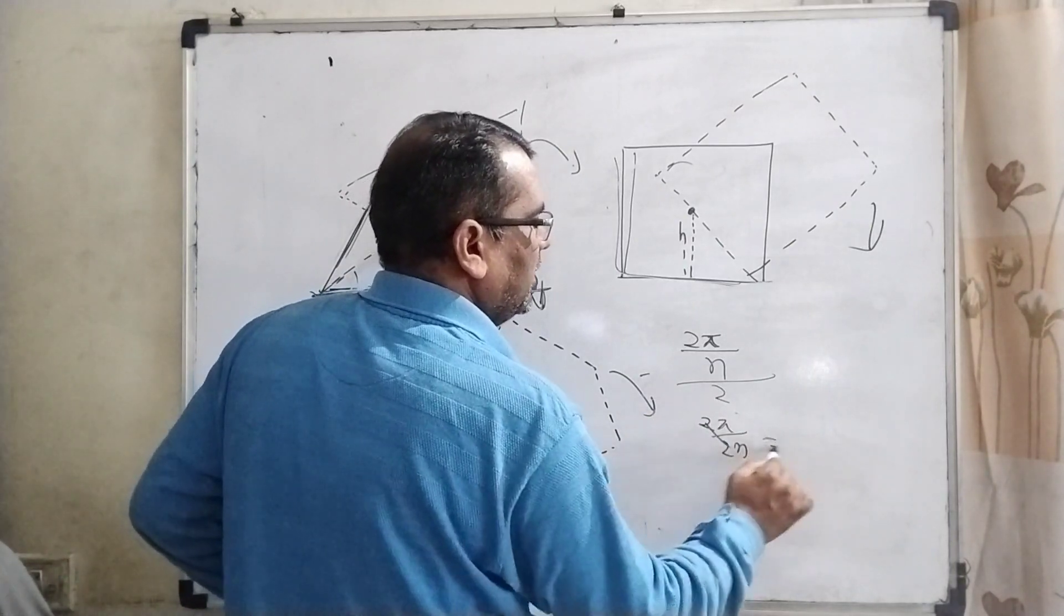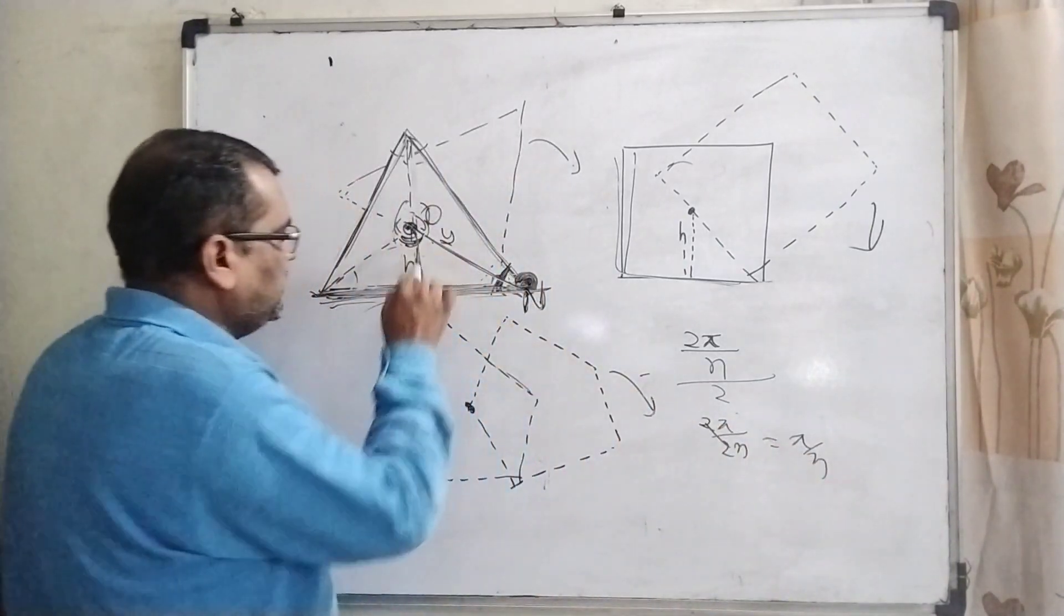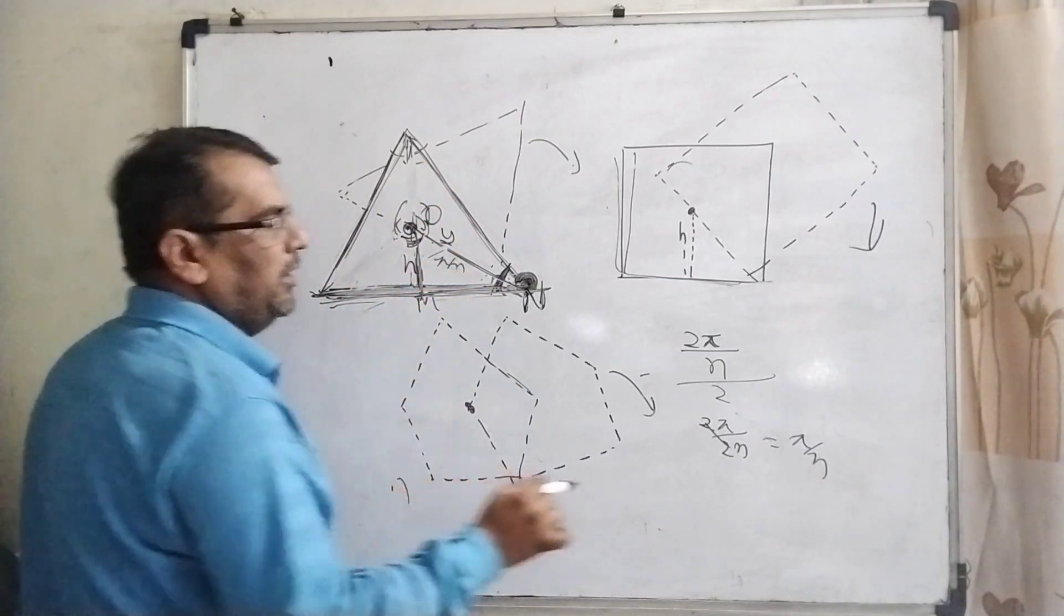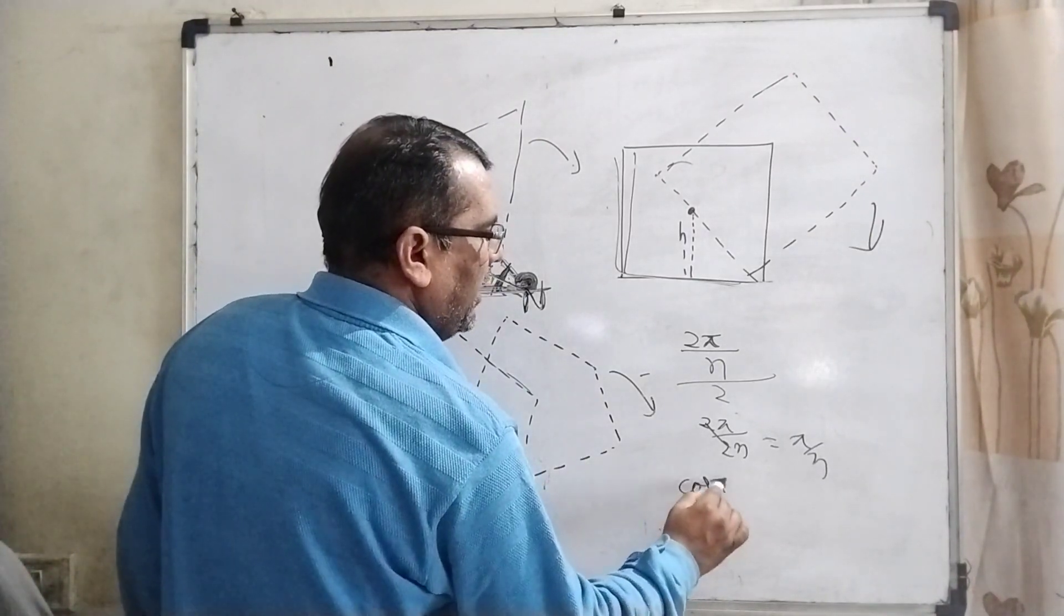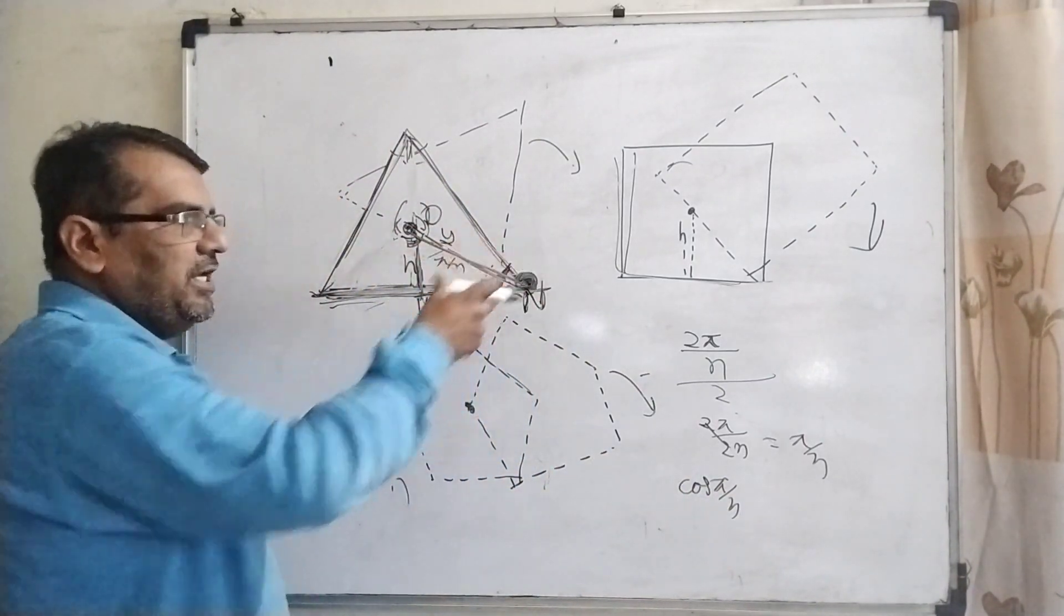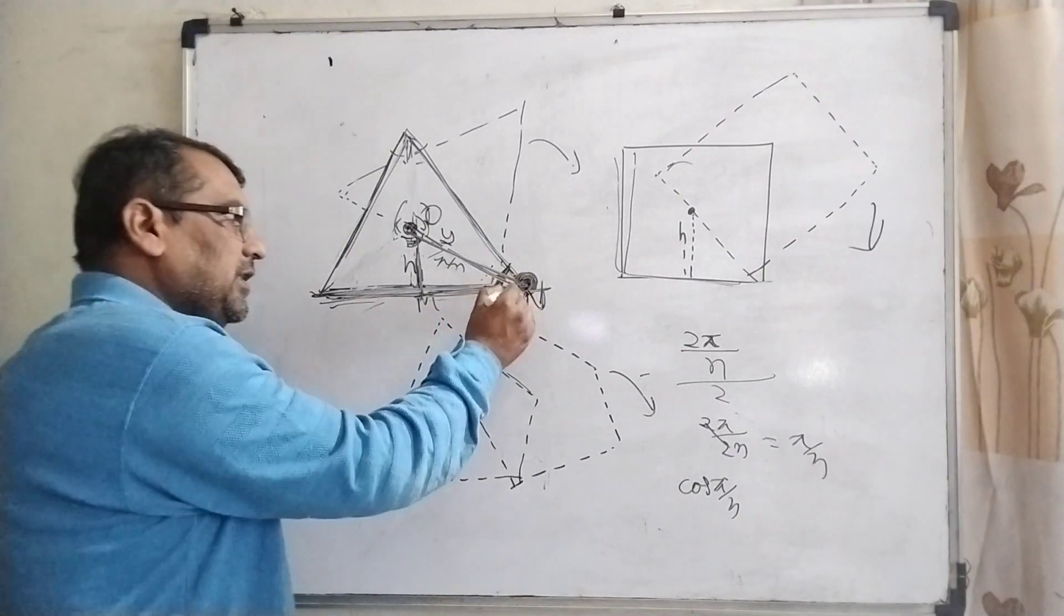Now cos(π/n), you can see that here the center of mass will be changed whenever we consider axis of rotation is n. Then π/n, this side opposite, this is perpendicular, this is the base.